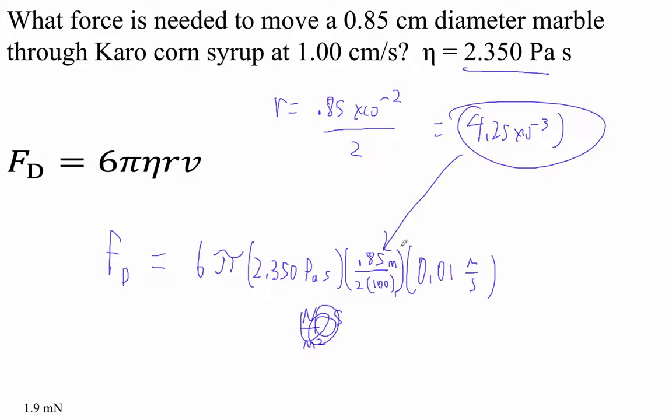Alright, times 0.01. And it's not very many newtons. I get 1.88 times 10 to the minus 3rd newtons, which is equal to 1.9 millinewtons. Millinewtons! It is a millinewton. There you go.